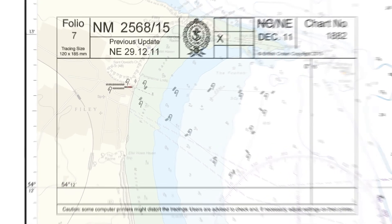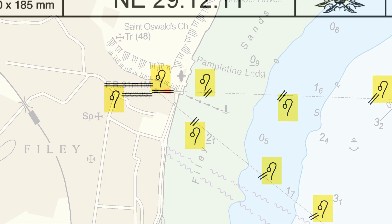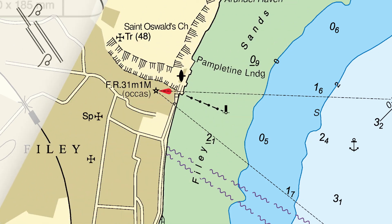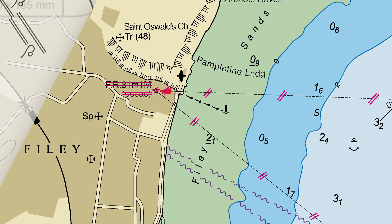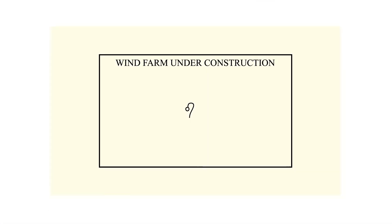Delete is used when a feature is to be removed altogether from the chart. Information that is to be deleted will be depicted by double strikethrough diagonal and horizontal lines. A deletion symbol will also accompany the information that is to be deleted. Where a note is to be deleted, the entire text area will be boxed with the title visible and the deletion symbol annotated within the box.